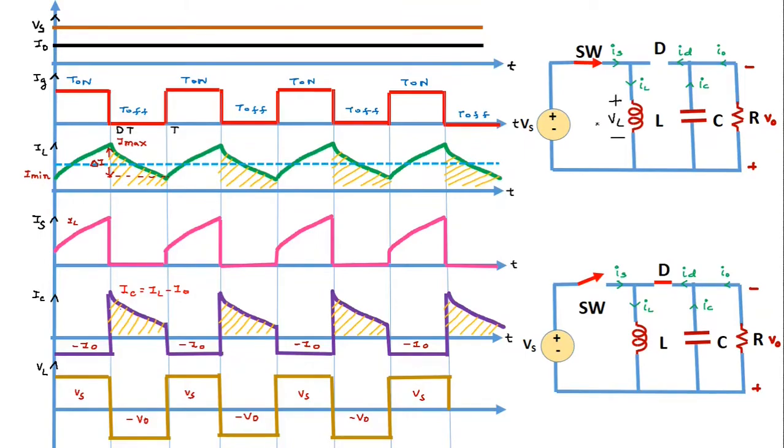The input voltage source is connected to the inductor L. The voltage across the inductor polarity will be plus on the upper point and minus on the lower point, represented by VL. The inductor voltage VL equals the source voltage VS, and VL is given by L·dIL/dt. As soon as the input voltage source is connected to the inductor, it starts storing energy.